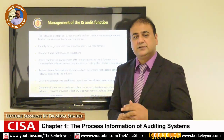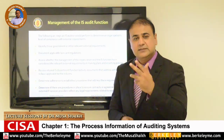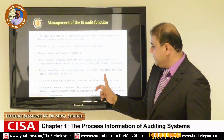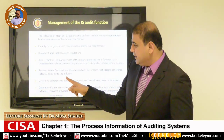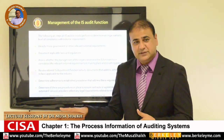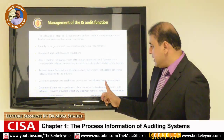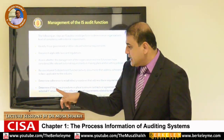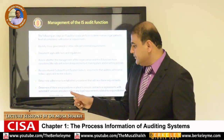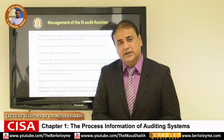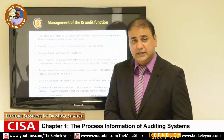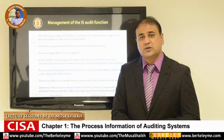We assess whether management and the information system function have considered relevant external requirements in making plans and setting policies. This includes identifying what laws apply to information security and systems, whether third-party reviews are needed, and whether special affiliations are required for online payment systems. We also verify that adherence to established policies and procedures is maintained through internal controls, and that contracts with external IT service providers reflect that all legal requirements have been met.